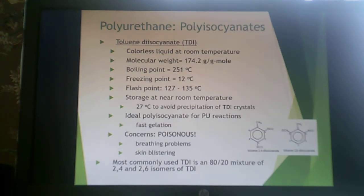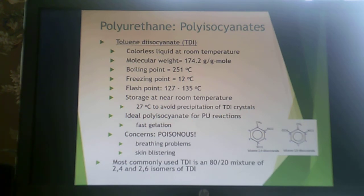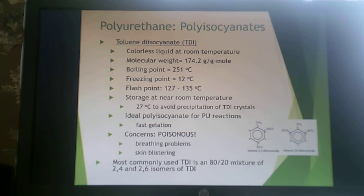TDI is a colorless liquid at room temperature. It is a small molecule with a freezing point of about 12°C and a boiling point of about 251°C, so it typically needs to be distilled to obtain a pure reactant. It has a flashpoint to be mindful of and is often stored at room temperature to keep it in liquid form and avoid crystal precipitation. TDI gives fast gelation, which is ideal for foam production.